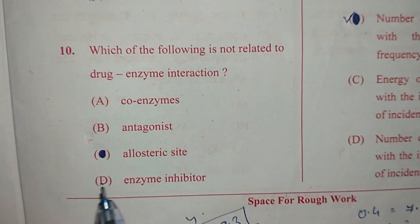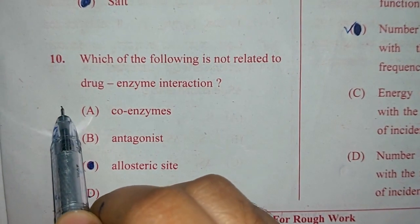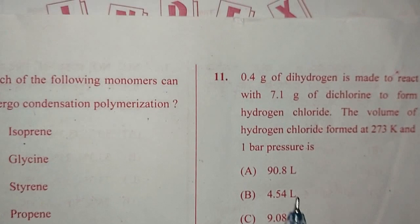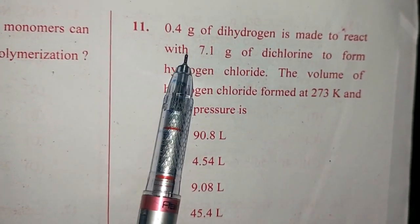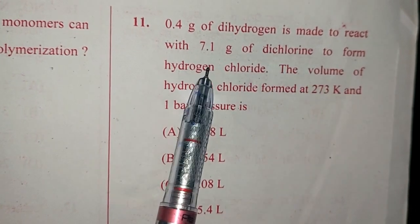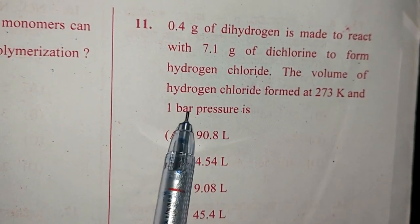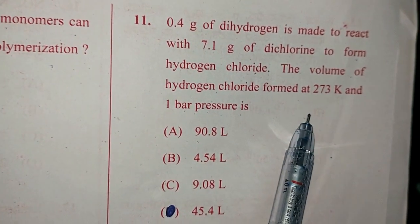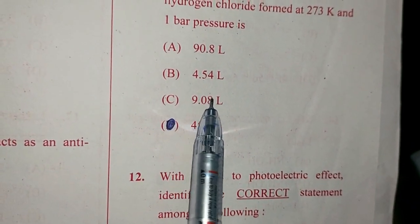Question number 10. Which of the following is not related to drug enzyme interaction? It is option A, coenzymes. Question number 11. 0.4 gram of dihydrogen is made to react with 7.1 gram of dichlorine to form hydrogen chloride. The volume of hydrogen chloride formed at 273 Kelvin and 1 bar pressure is? The answer is B, 4.54 litre.